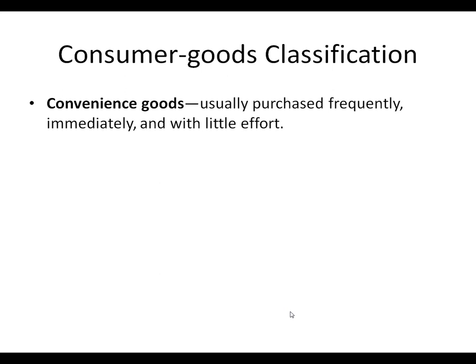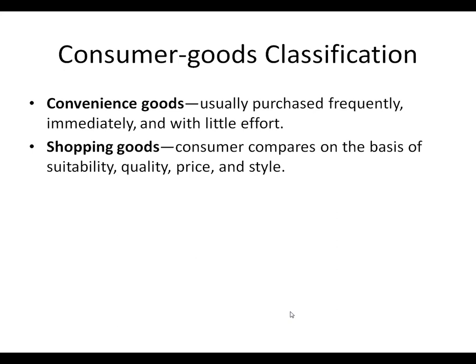Looking at consumer goods — tangible products purchased by end users — we can break these into categories. Convenience goods are products purchased frequently and immediately with little effort, like a Coca-Cola, a pack of gum, or potato chips. Shopping goods are products where you spend more time considering different options, prices, quality, and style — like clothes. You compare on the basis of different attributes, which takes much more effort than convenience goods.